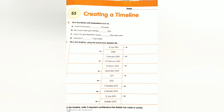Fill in the timeline using events from Malala's life. She spoke in Peshawar about why girls should go to school. Malala Yousufzai was born on 3rd January 2009. She started writing an internet diary for BBC under a fake name. On 25th February 2009, Malala's school reopened. On 12th March 2009, she stopped writing the internet diary. In December 2009, it was revealed that Malala was writing the internet diary.